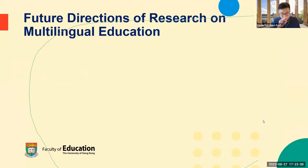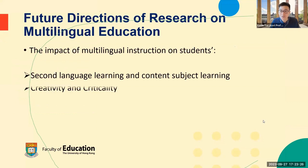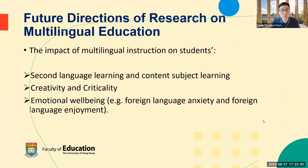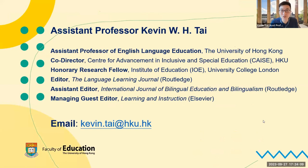In terms of future research directions for multilingual education, future research would benefit from exploring the impact of multilingual instruction on student second language learning and content subject learning, including creativity, criticality, and emotional well-being — such as foreign language anxiety and foreign language enjoyment. I recently received a large research grant from the Hong Kong Research Grant Council to look at the affordances of creating a translanguaging space to reduce ethnic minority students' foreign language anxiety when they learn Chinese as a second language. That is the end of my presentation — please ask any questions.